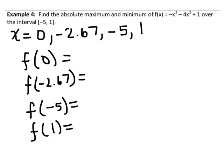I'm going to need to consider these values of x in my original function to determine the absolute maximum and absolute minimum. So we're going to find f of 0, f of negative 2.67, f of negative 5, and f of 1. You can plug these into the original function — probably easiest on your calculator, especially since you're dealing with the decimal number negative 2.67. I've already taken the guesswork out of this: when we plug in 0 we get 1; when we plug in negative 2.67 we get approximately negative 8.4815; when we plug in negative 5 we get 26; and when we plug in 1 we get negative 4.